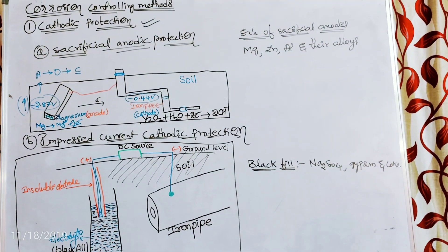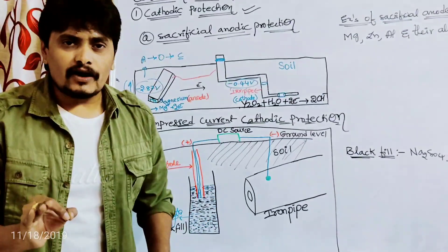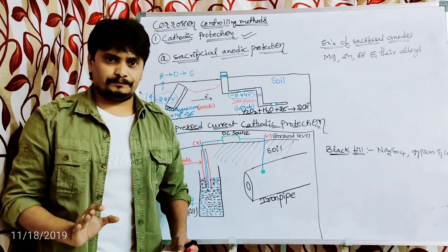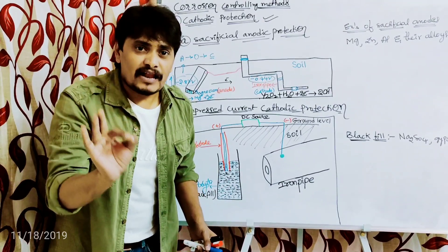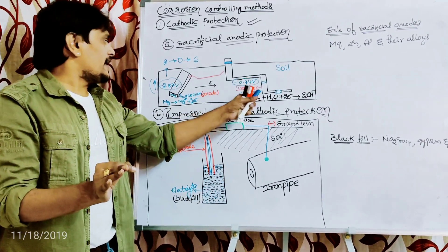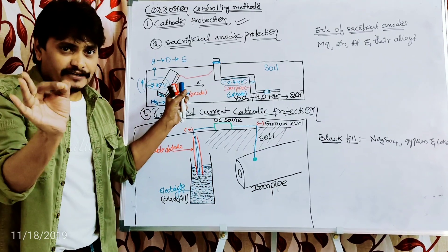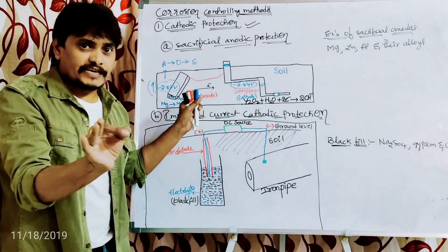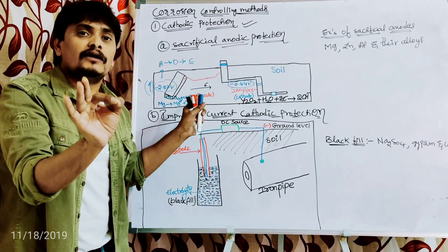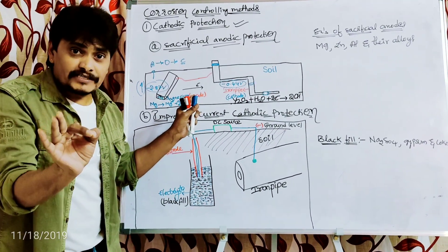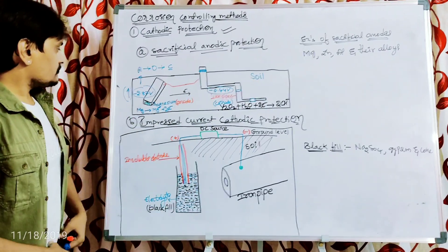Examples of sacrificial anodes include magnesium, zinc, aluminium, and their alloys. The sacrificial anodic protection method is extensively used to prevent corrosion of ship hulls, which are made of iron. In a similar fashion to how we connected the iron pipeline to magnesium, the ship hull is connected to magnesium, zinc, aluminium, or their alloys to prevent corrosion of the iron.